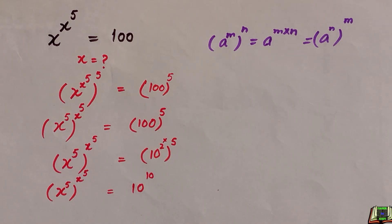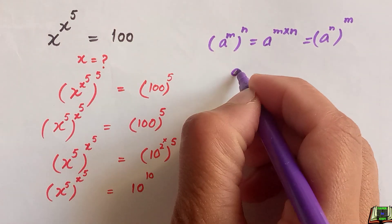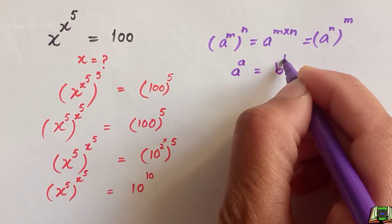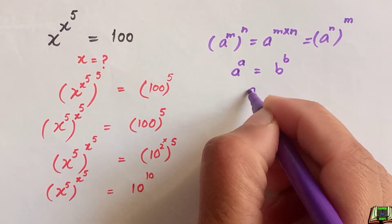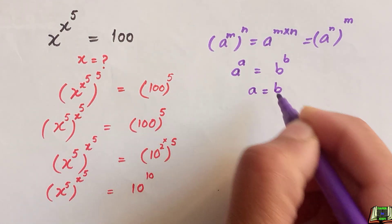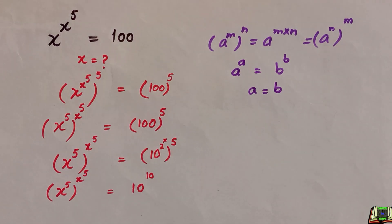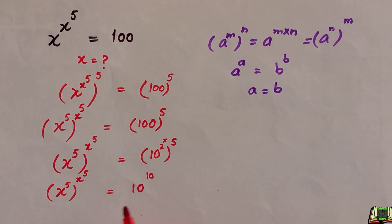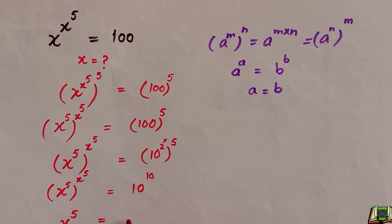We know the rule: if a raised to the power a equals b raised to the power b, then a equals b. Using that rule, since the bases and powers match in structure, we can say that x to the power 5 is equal to 10.